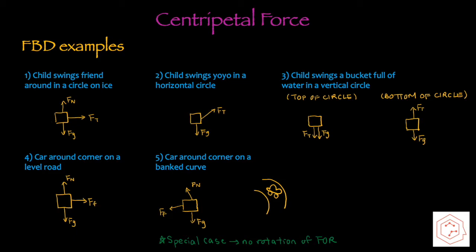The fourth scenario is a car rounding a corner on a level road. In this case, normal force is acting upwards and gravitational force is acting downwards, whereas the force that provides the centripetal force is friction.